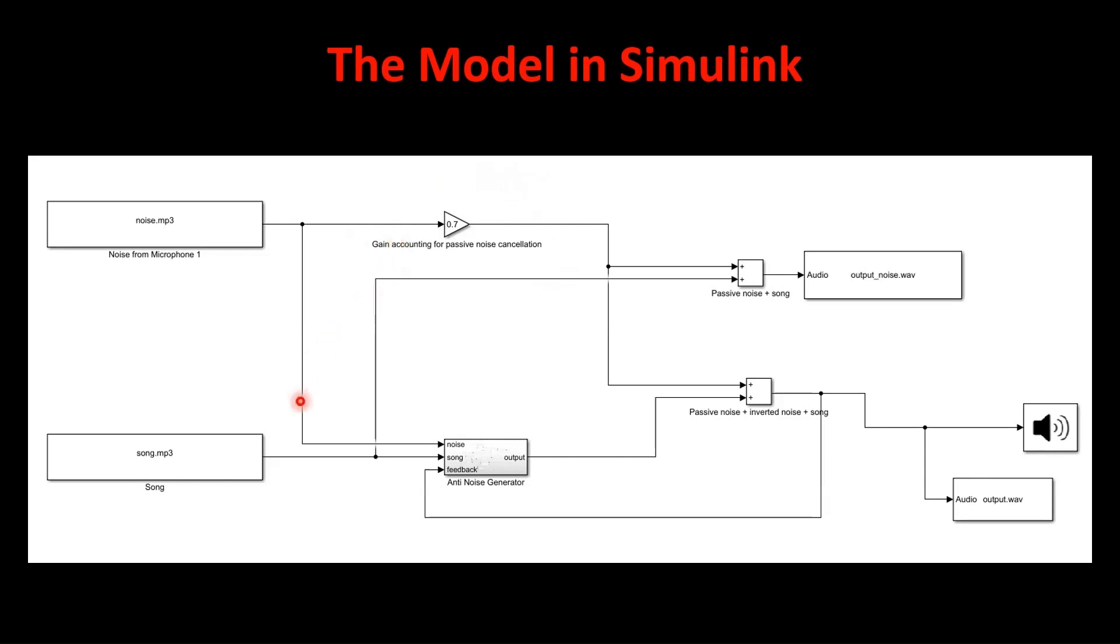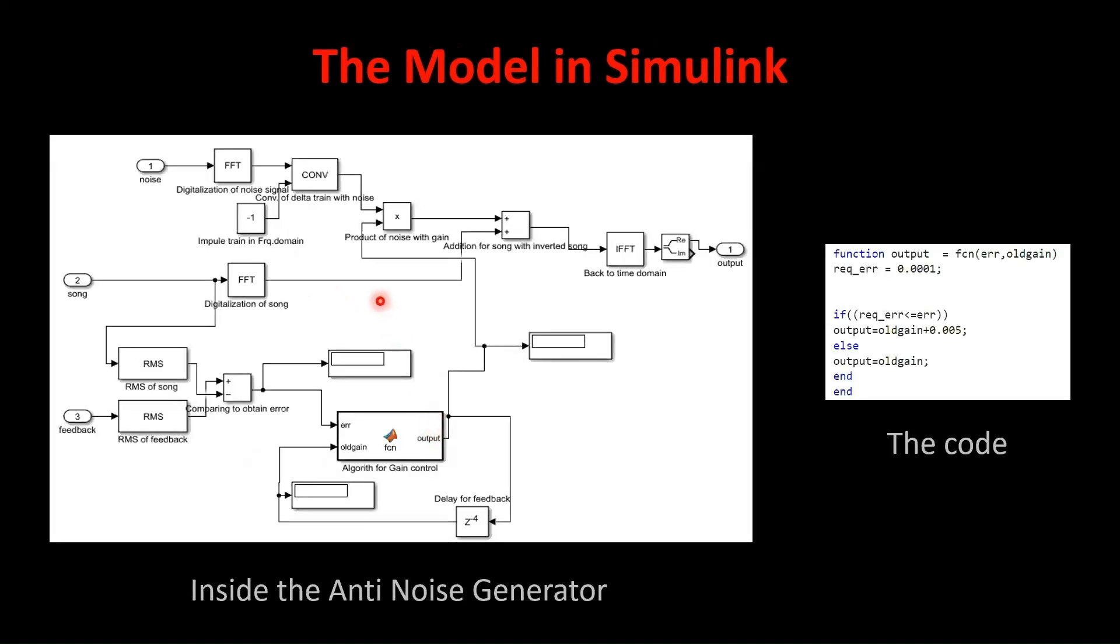So what we are doing is we made a subsystem called anti-noise generator. We are taking noise and the song as an input. This is noise and song, and since we need to generate anti-noise, we need to invert the existing noise. So we digitalize it, that is we apply FFT, then convolve it with minus one to get the inverted version, and this is the song, the actual song. We are again digitalizing it, and we need to add this inverted noise with the digitalized song.